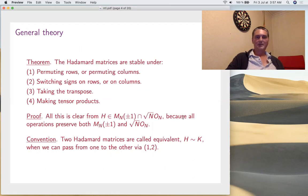At the level of general theory, what can we say? These are very simple things. If you take a Hadamard matrix, it stays Hadamard under permuting the rows or the columns, or switching signs to one row, or switching sign to one column. Also taking the transpose, and making tensor products. All this is online computation. Actually I don't even need computation - if I take this definition for Hadamard matrices, binary matrix with rows orthogonal which means it must be in square root of N times ON, all these operations preserve both properties. Binary matrices are stable under all this, the orthogonal group is stable under all this.